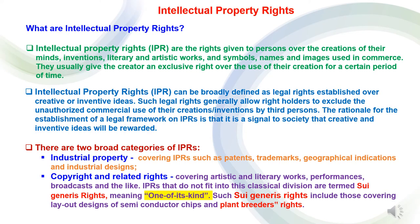First, to understand what are intellectual property rights. Intellectual property rights are the rights given to persons over the creation of their minds — inventions, literary and artistic works, symbols, names and images which are used in commerce. They usually give the creator an exclusive right over the use of their creation for a certain period of time. Intellectual property rights can be broadly defined as legal rights established over creative or inventive ideas. Such legal rights generally allow right holders to exclude the unauthorized commercial use of their creations or inventions by third persons.